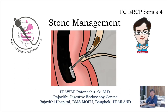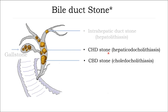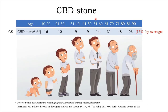FC EASP Series No. 4: Stone Management. There are many locations of stones in the bile duct — in the core, in the hepatic, and extra-hepatic. For this presentation, I will focus on stones in the extra-hepatic bile duct. Common bile duct stones are found in roughly 60% of patients with gallstone, and this percentage increases with elderly patients.